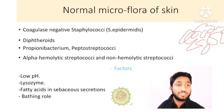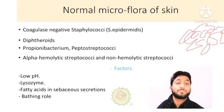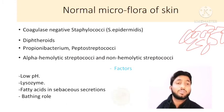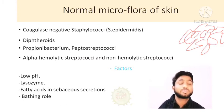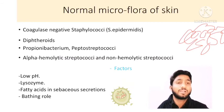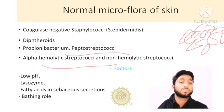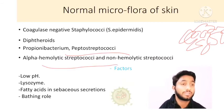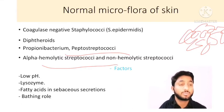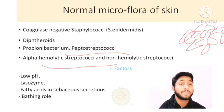Other skin microbiota include diphtheroids, Propionibacterium, and Peptostreptococcus. There are also alpha-hemolytic streptococci and non-alpha-hemolytic streptococci present on the skin, which can cause hemolysis under certain conditions.